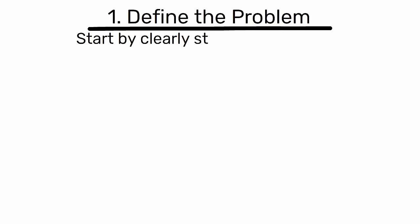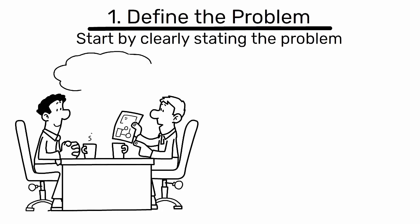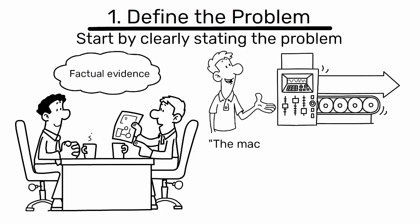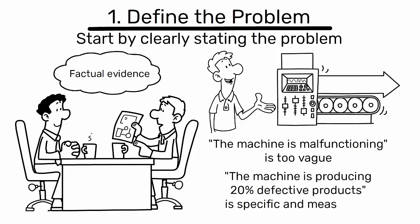Step 1: Define the problem. Start by clearly stating the problem. It's crucial to be specific and base the problem on factual evidence. For example, 'the machine is malfunctioning' is too vague, but 'the machine is producing 20% defective products' is specific and measurable.